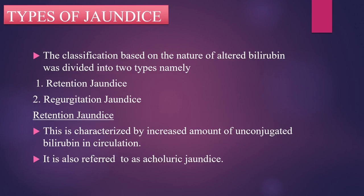The next topic is the types of jaundice. The classification of jaundice is based on the nature of altered bilirubin. It can be divided into two types, namely: the first one is retention jaundice, and the other one is regurgitation jaundice.